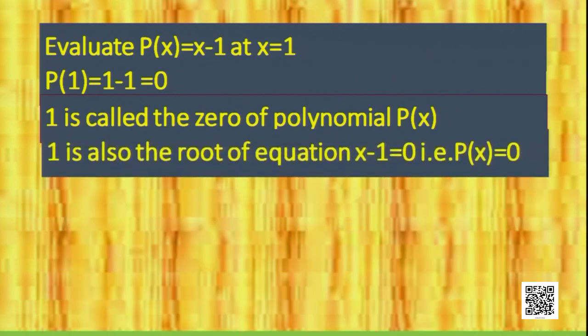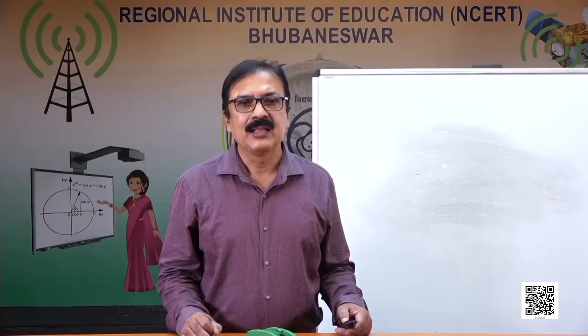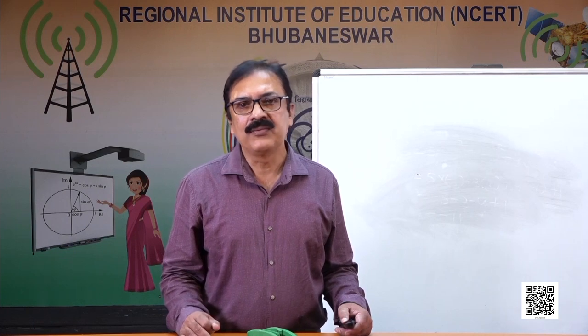Also, if we look at the equation x − 1 = 0 and solve it, the value of x is 1. So 1 is called the zero of polynomial P(x), and it is also the root of the equation x − 1 = 0. Since x − 1 is our polynomial P(x), we can say that 1 is the root of the equation P(x) = 0.